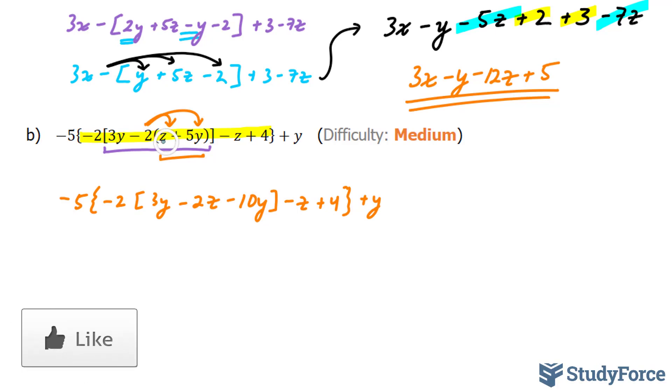Now that we've liberated these two terms, we need to liberate these three terms. But unlike before, these can actually be combined. 3y minus 10y. Instead of rewriting everything, I'm just going to replace negative 10y with negative 7y.